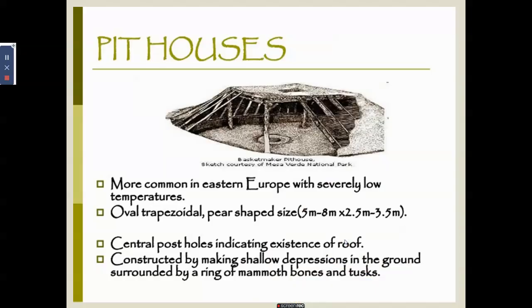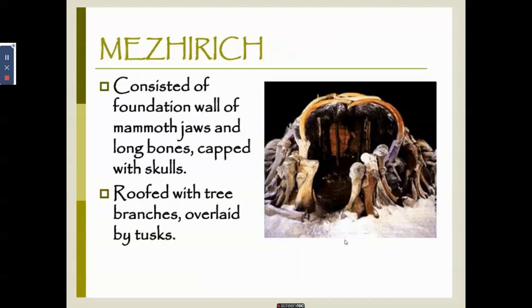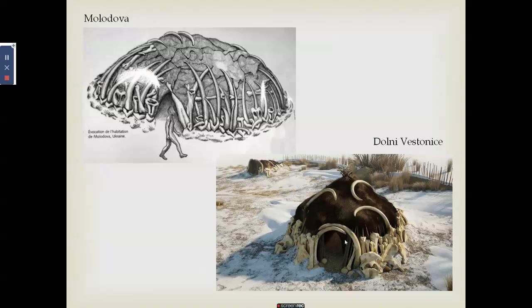They also built huts that were oval in shape, discovered to have been built close to seashores, with stone supports, posts, and floors made of organic matter and ash. Pit houses were constructed by making shallow depressions in the ground surrounded by a ring of mammoth bones and tusks — these were dug partially into the ground as protection against extreme weather and predators. Examples include the Mezhirich and Molodova sites.